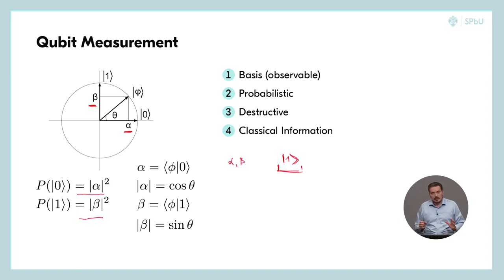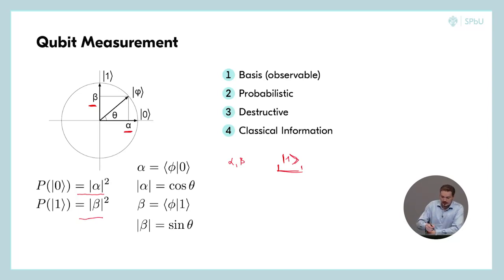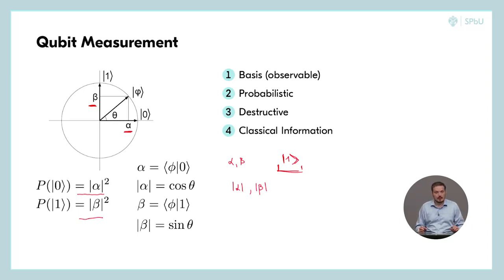But maybe we can make thousands or millions of copies of these states and measure all of them to estimate not alpha and beta but their moduli, which would give us much more information than just one bit. Unfortunately, we cannot do even this, because the no-cloning theorem, proved by Wootters, Zurek, and Dieks in 1982, tells us that copying of unknown quantum states is impossible.